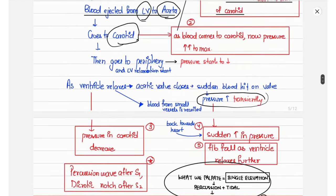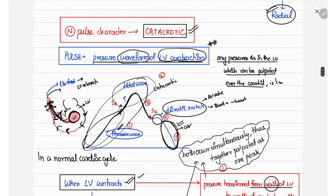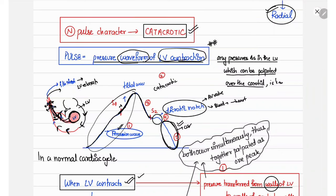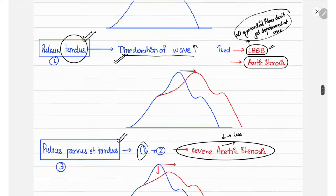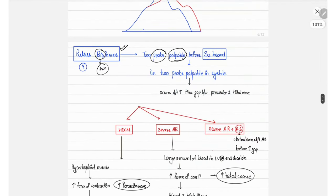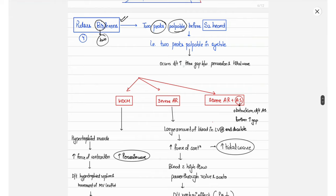Normally the percussion wave and tidal wave are palpated together due to a small time gap between them, but if there is an increased time gap between the percussion and tidal wave, both will be palpated as separate waves. Since both still occur before S2, this is known as pulsus bisferiens. It occurs whenever there is an increased time gap between the percussion and tidal waves.